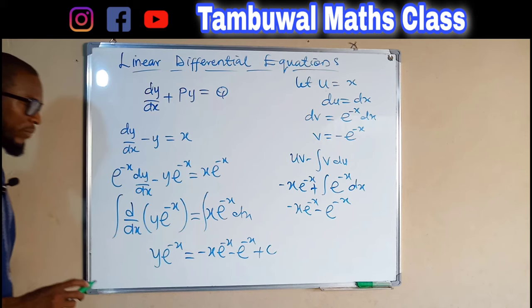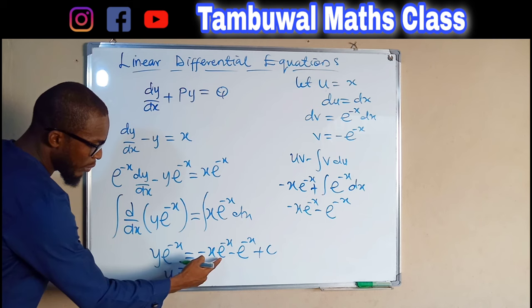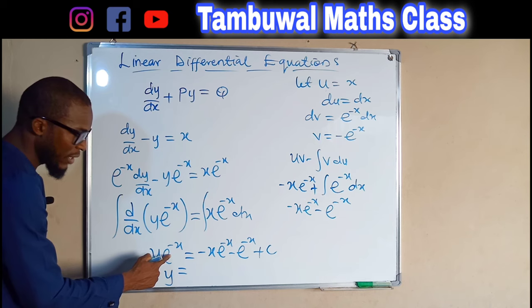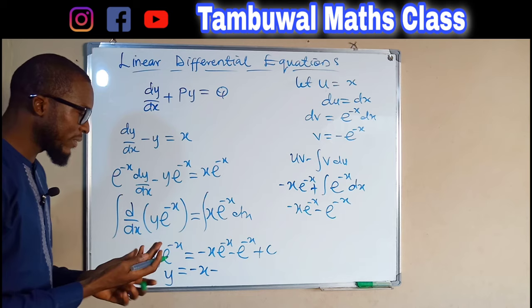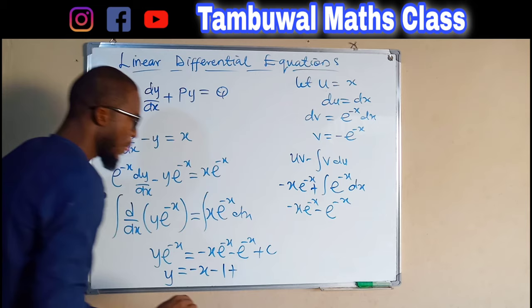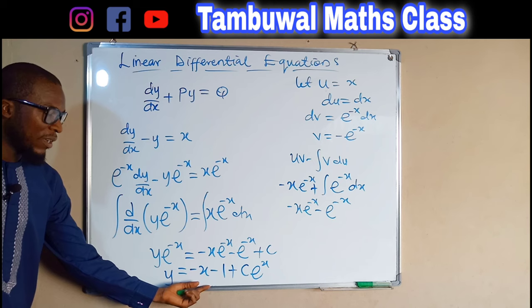We can divide both sides by e^(-x), leaving y on the left. Dividing -x · e^(-x) by e^(-x) leaves negative x. Dividing -e^(-x) by e^(-x) leaves negative 1. For the constant, dividing by e^(-x) is the same as multiplying by e^x, giving Ce^x. Hence the solution is y = -x - 1 + Ce^x.